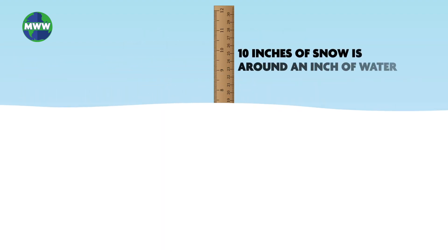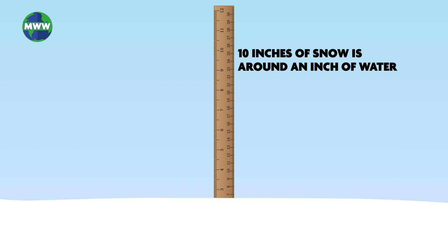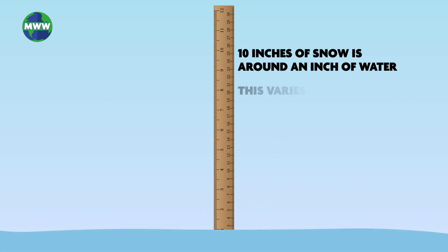On average, 10 inches of snow melted is around an inch of water. This varies depending on how much snow a location typically sees.